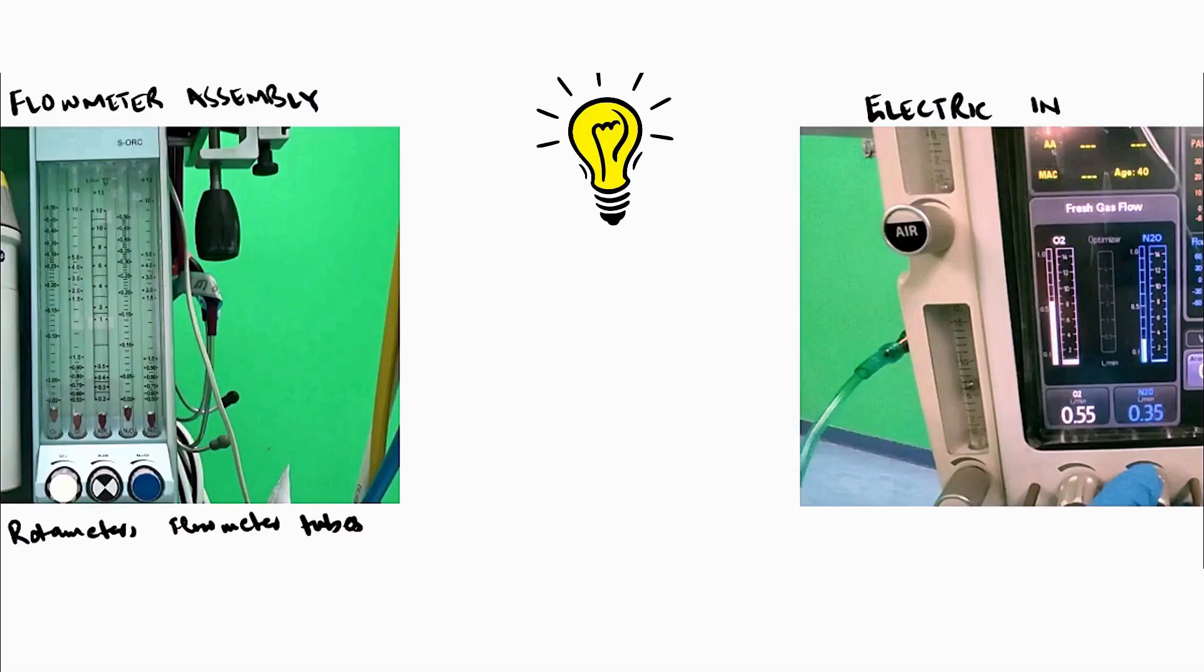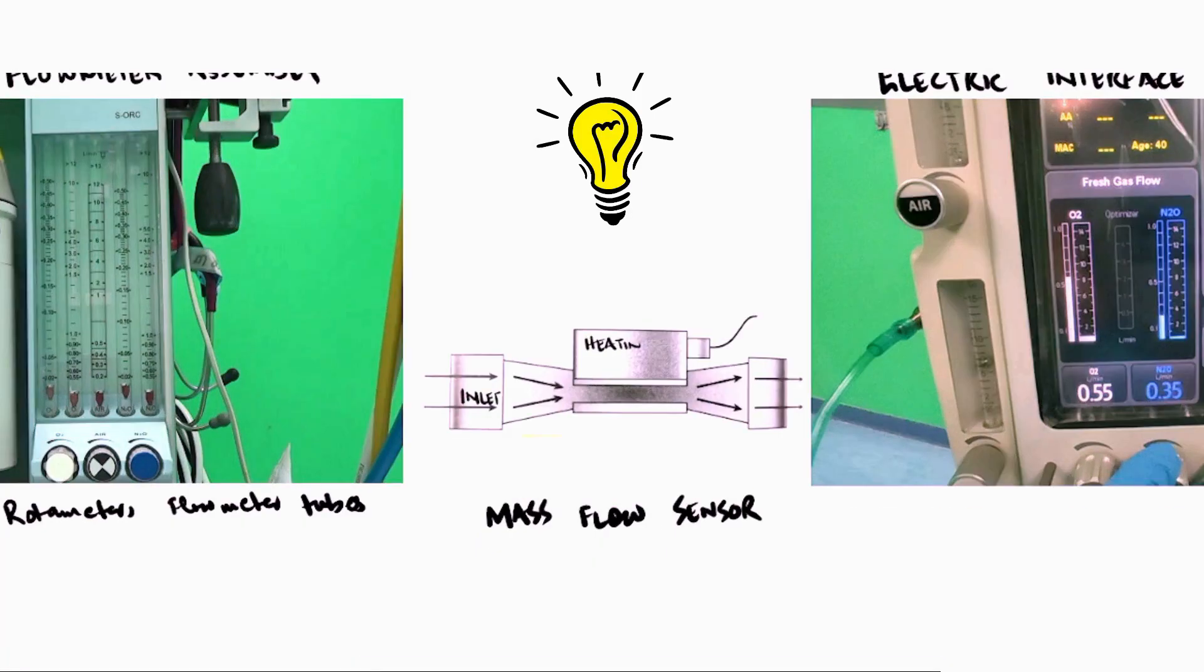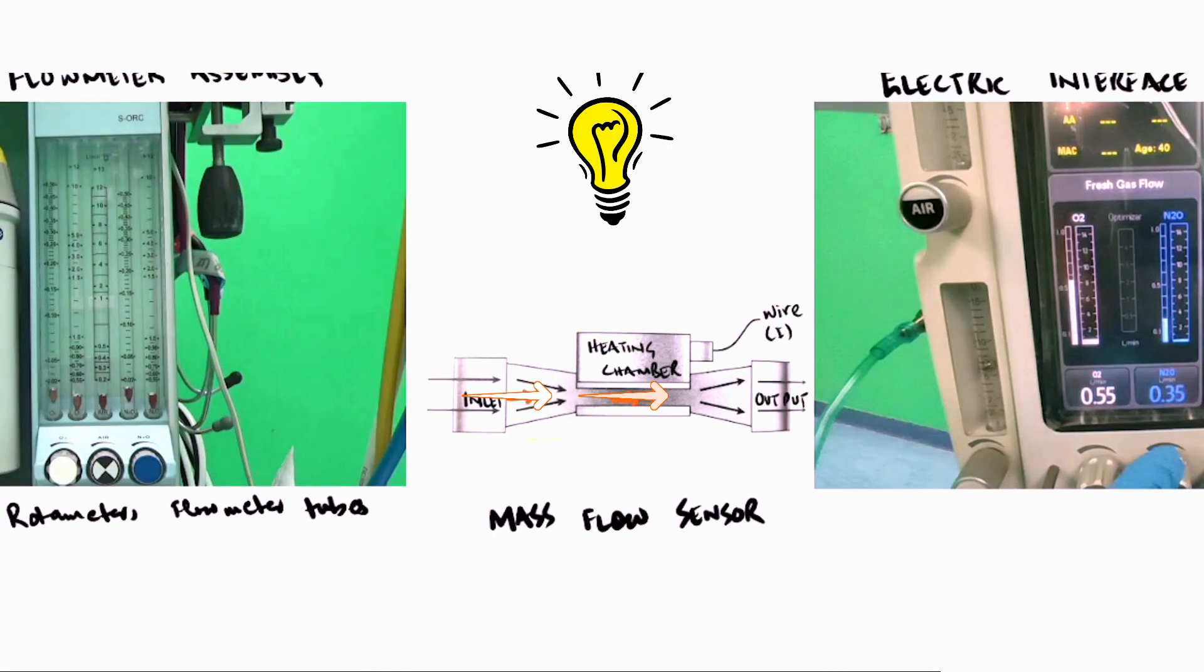In electronic type flow meters, the flow sensors are electronic too, such as vanes anemometer or mass flow sensor. Let's see how mass flow sensor works. Now it has an inlet, a heating chamber powered by electric wire and an outlet. When flow enters the heating chamber, the chamber keeps the temperature of the gas constant. Now if you increase the flow, the chamber would require higher electricity voltage to keep the gas temperature constant. This change in electricity requirement helps it sense the total flow passing through the chamber. However, since these sensors are power dependent, the machine has a mechanical backup as well in case of power failure.